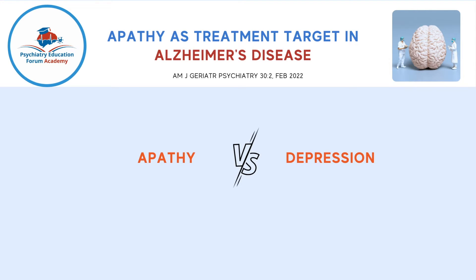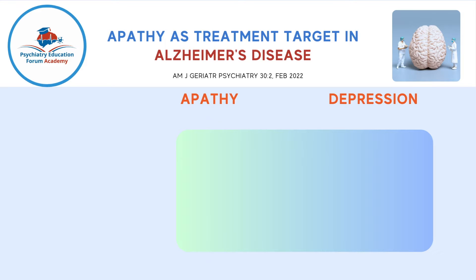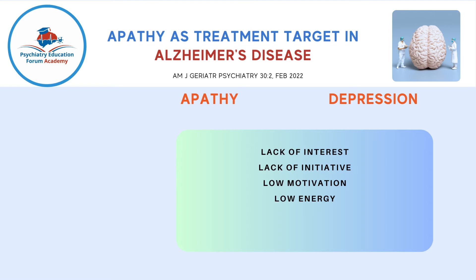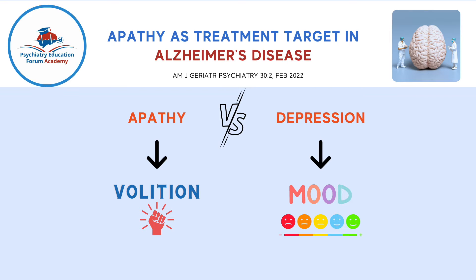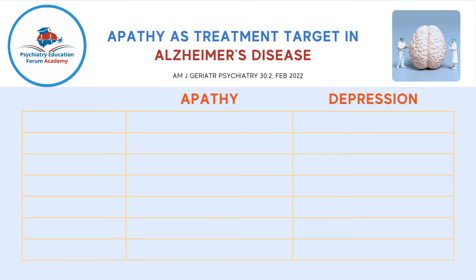The most important clinical question is: how is apathy different from depression? They both present with very similar features — lack of interest, lack of initiative, low motivation, low energy, decreased concentration, and decreased libido. The basic difference is that apathy targets volition and depression targets mood. But how do you differentiate this clinically, and what should you look for in treatment response?